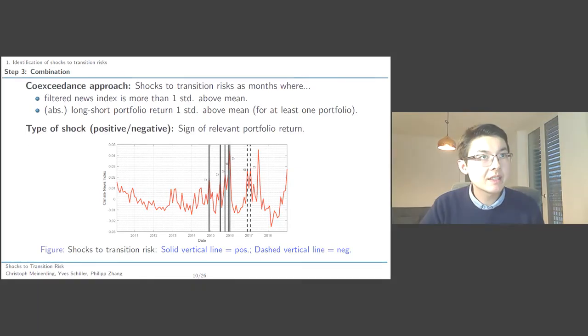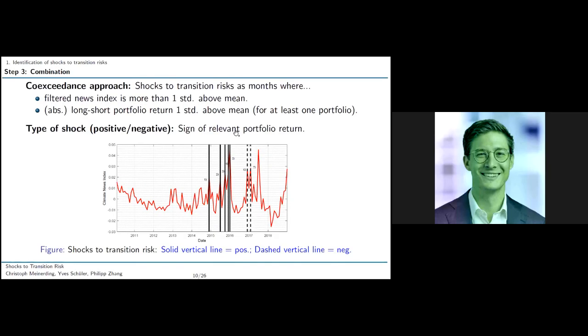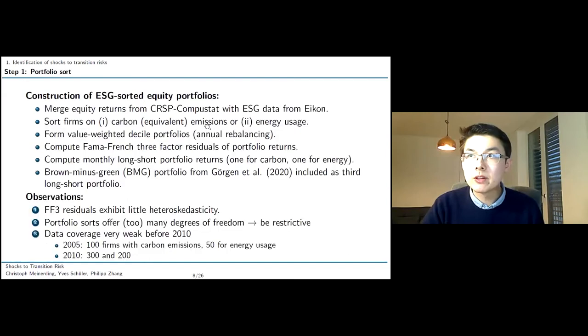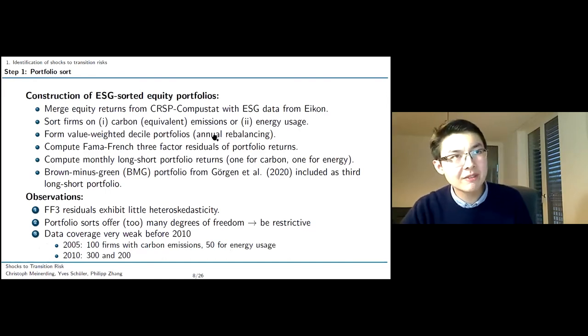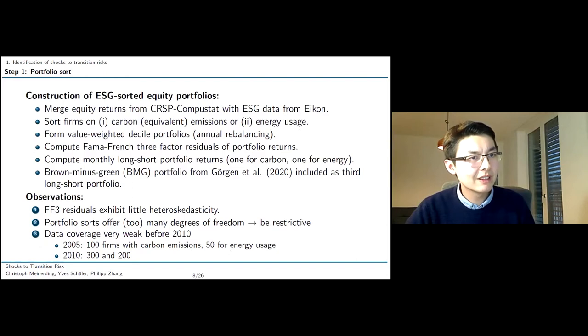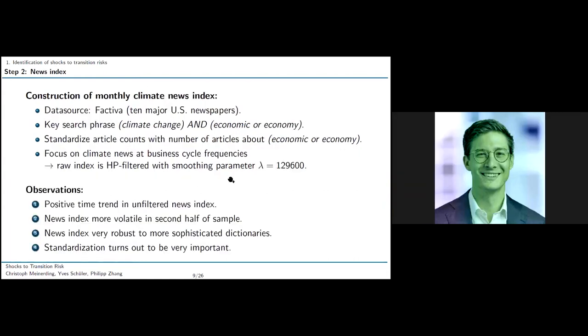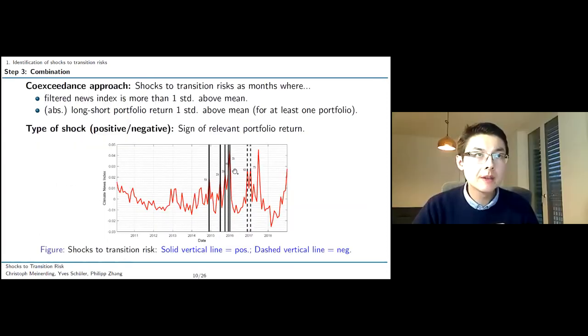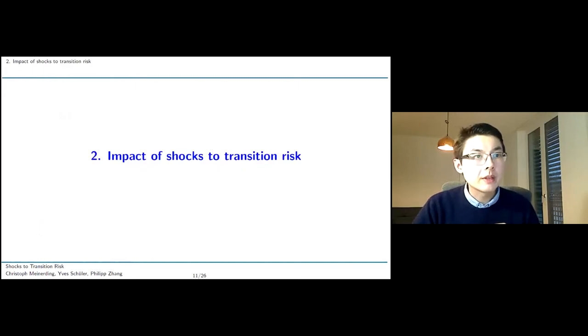These solid lines here, one, two, five, those indicate events where the long short returns are negative in the sense that brown firms underperform relatively to green firms, which we then interpret as an increase in transition risk. The dashed lines six and seven stand for positive returns for our long short portfolio. Months in which green firms are underperforming relatively to brown firms, which we interpret as a decrease in transition risk. So that's how we identify our shocks. Any questions for that? I was wondering, is it absolute total emissions or relative to size or something like that? You mean the carbon emissions by which? Yes. That's actually a good question. I think it's relative to size, but I have to admit I'm not 100% certain. So I'd have to come back to you on that.